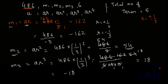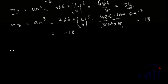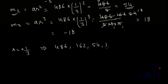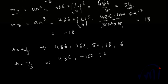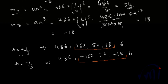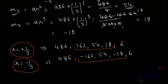So we get two sets of patterns. When r = +1/3, the pattern is: 486, 162, 54, 18, 6. When r = −1/3, the pattern is: 486, −162, 54, −18, 6. These are the two patterns and the two sets of geometric means. In the next video we are going to take one more example to find geometric means. Bye-bye till then.